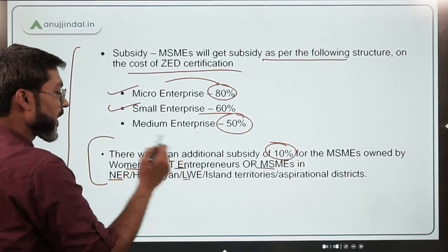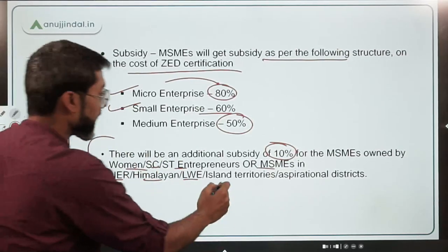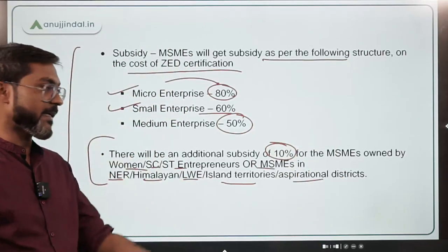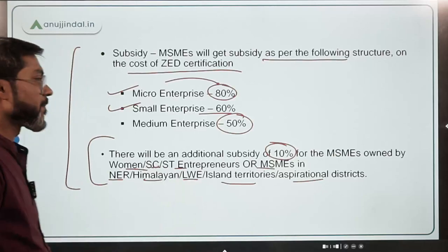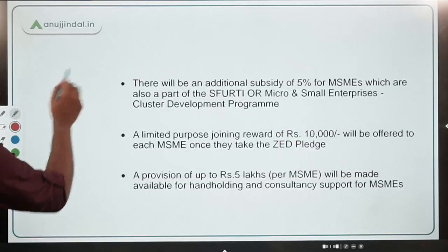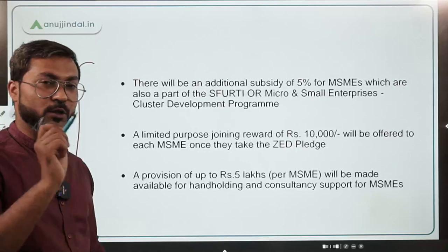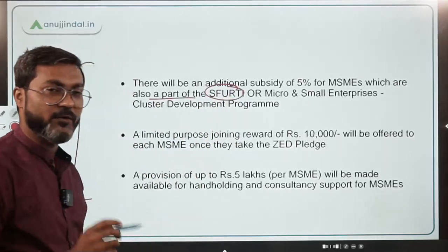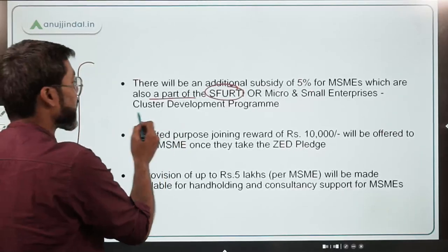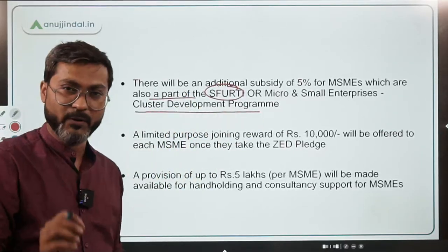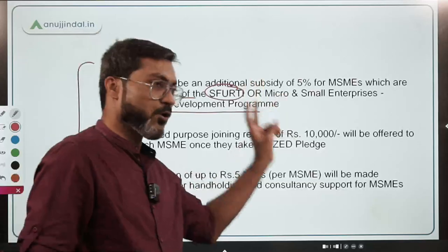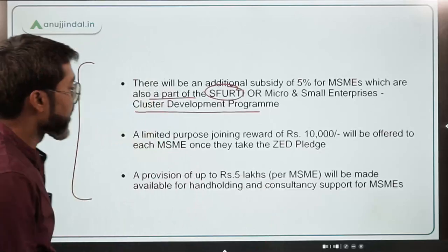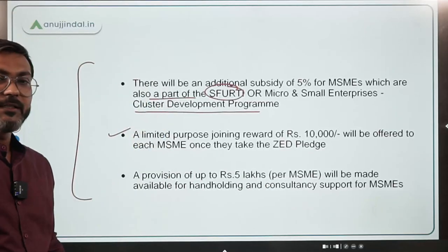The 10% additional subsidy also applies to MSMEs in Himalayan regions, left-wing extremism affected regions, island territories, and aspirational districts. Furthermore, there is an additional 5% subsidy for MSMEs that are part of the SFURTI scheme or the Micro and Small Enterprises Cluster Development Program.